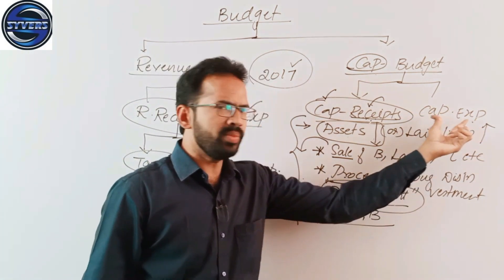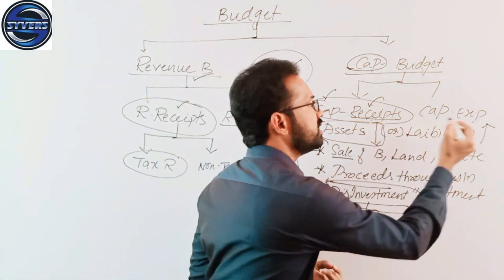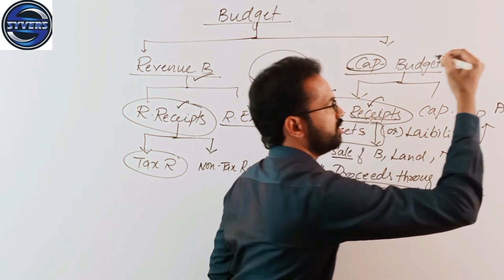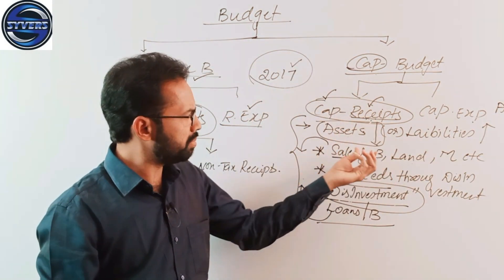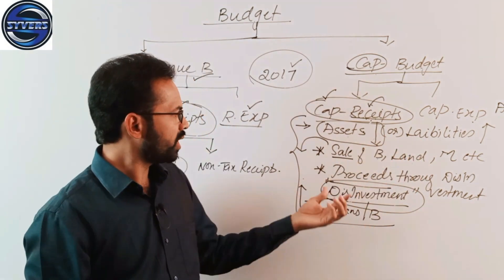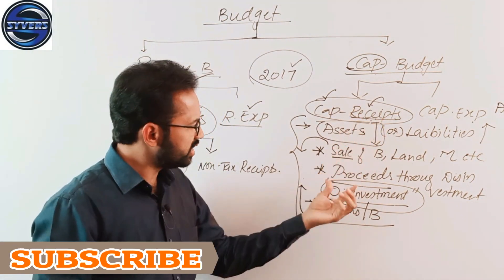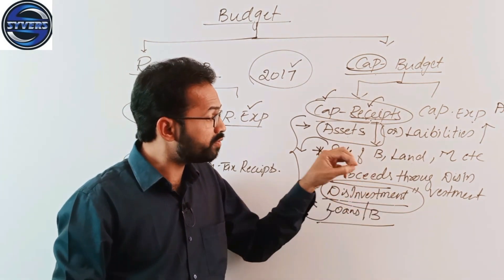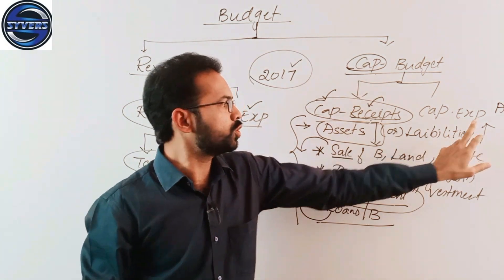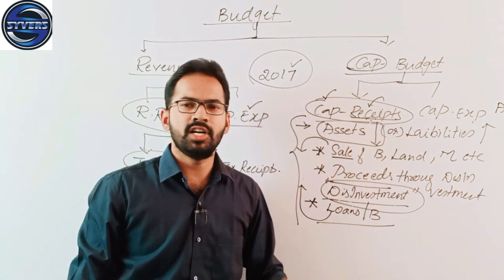Capital expenditure is just opposite to capital receipts. It involves either increase of assets or decrease of liabilities. Examples include purchase of buildings, land, machinery, construction of bridges, construction of institutions, and investment. Investment and purchase of shares are examples of capital expenditure.